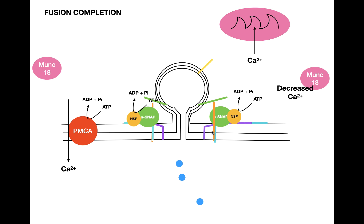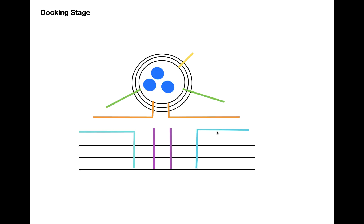Once most of the neurotransmitters are released and all the proteins are dissociated, we go back to the docking stage. The T-snares — SNAP25 and syntaxin — unbind from the complex and remain in the presynaptic membrane, ready for another vesicle to begin another fusion cycle. The synaptobrevin that remained in the presynaptic membrane is recycled through endocytosis and used to create more vesicles.